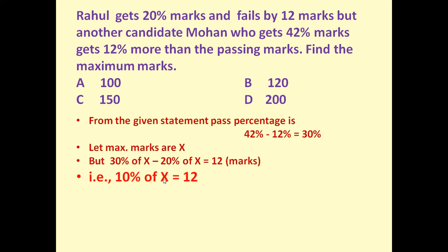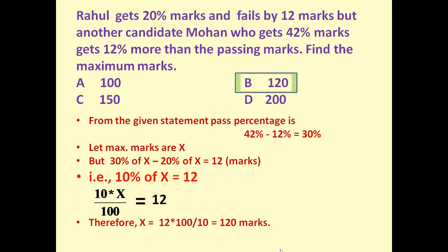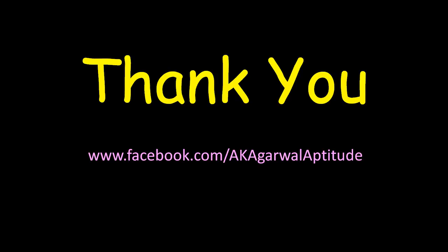X is the maximum marks. 10 percent of x means 10 into x upon 100 is equal to 12. Solving this equation, we get x is equal to 120. So maximum marks are 120. Thank you very much for watching this video. You can also follow me on Facebook.